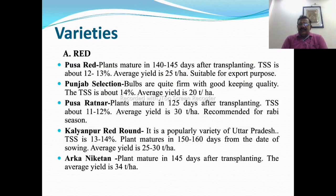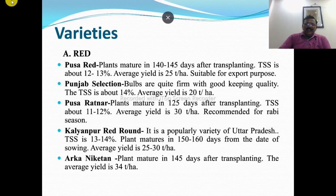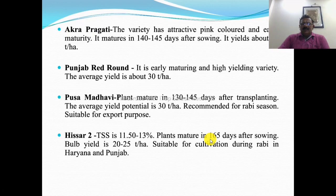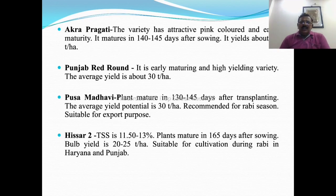Kalyanpur Red Round is a popular variety of Uttar Pradesh introduced by CSAUA&T Kanpur, TSS 13 to 14 percent, plant matures in 150 to 160 days, and average yield is 25 to 30 tons per hectare. Arka Niketan introduced by IIHR Bangalore matures in 145 days after transplanting with average yield of 34 tons per hectare. Arka Pragati, also introduced by IIHR Bangalore, has attractive pink color, maturity 140 to 145 days after sowing and yield of 25 to 30 tons per hectare.